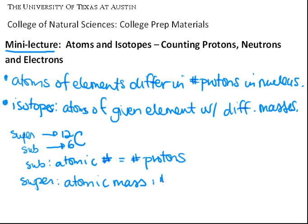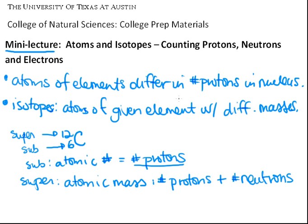The atomic mass tells you the sum of the number of protons and the number of neutrons. So you can use these two numbers to find the number of protons and neutrons. Carbon is the sixth element and it has six protons, and any atom found to have six protons must be some form of carbon.